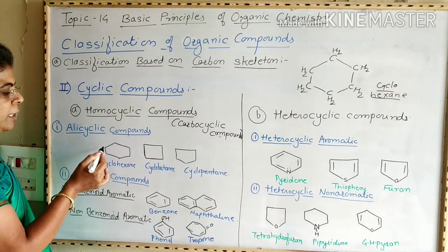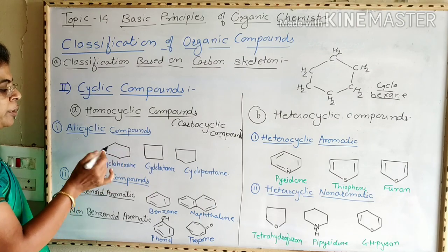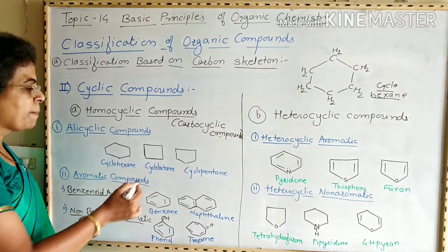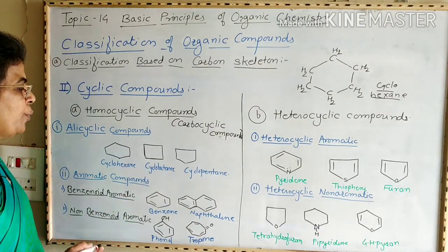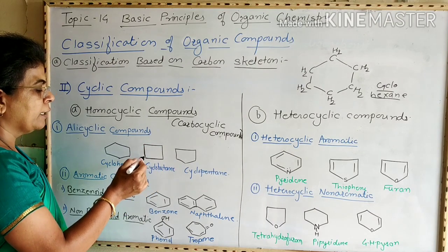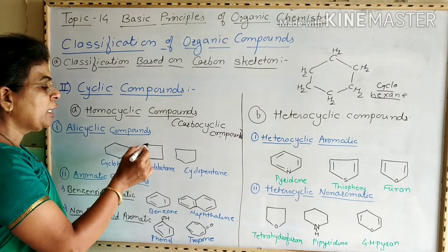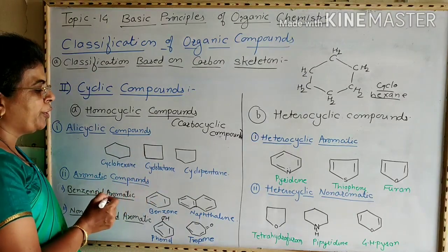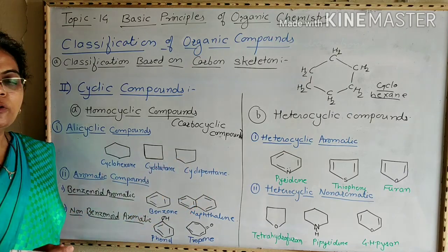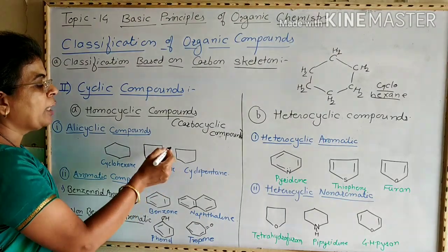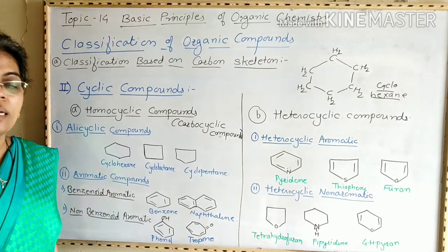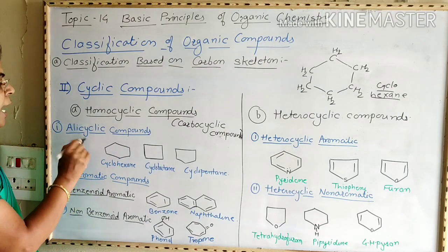For example, cyclohexane is a six-membered ring in which six carbon atoms take part in ring formation and only carbon-carbon single bonds are present. Cyclobutane is a four-membered ring formed by four carbon atoms. Cyclopentane is a five-membered ring in which five carbon atoms take part in ring formation with only carbon-carbon single bonds present. These are all named as alicyclic compounds.